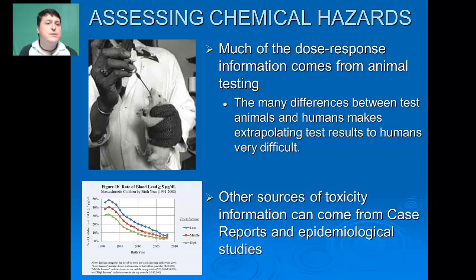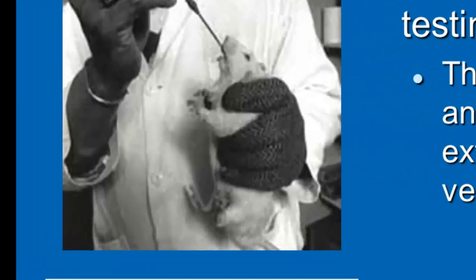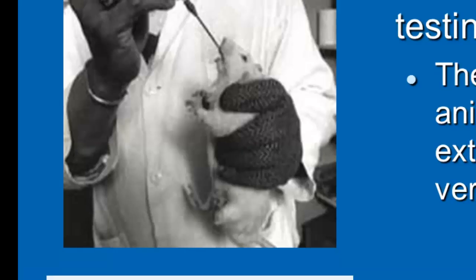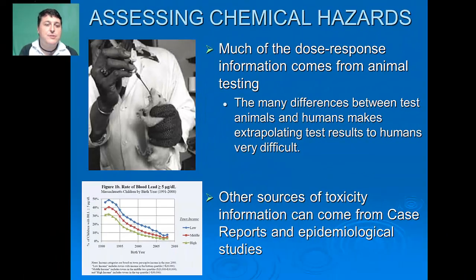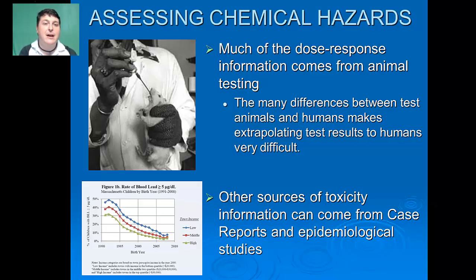Much of the dose-response information that we have actually comes from animal testing. Unfortunately, the many differences between test animals and humans make extrapolating test results to humans very difficult. So we also seek other ways to get information on toxicity levels — one place being case reports, looking at historical data on negative impacts of certain chemicals on humans, typically from homicide reports, accidental overdoses, or information from suicide attempts.